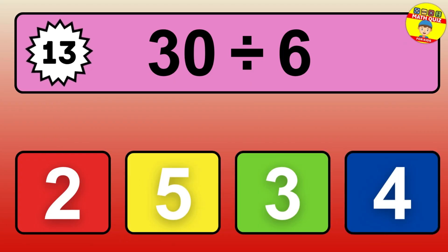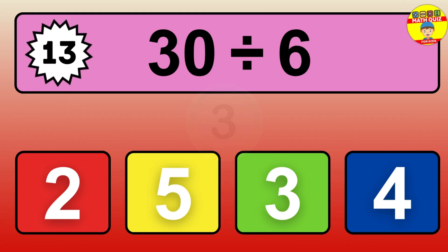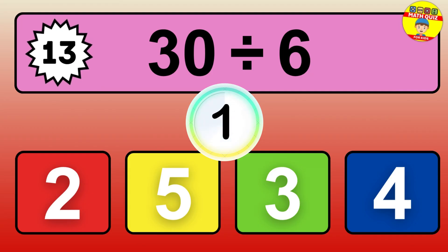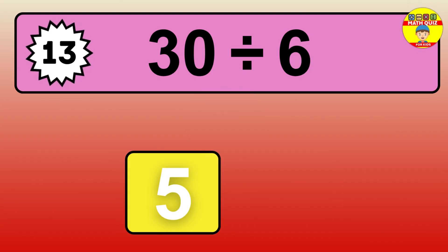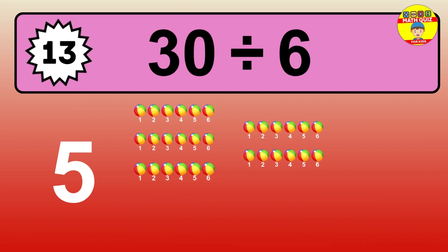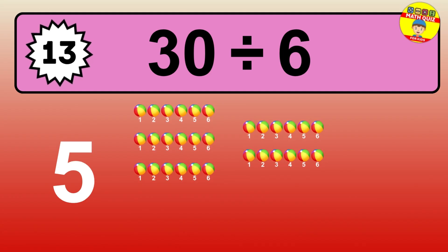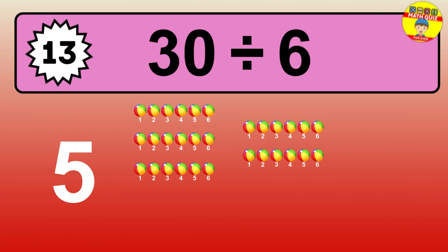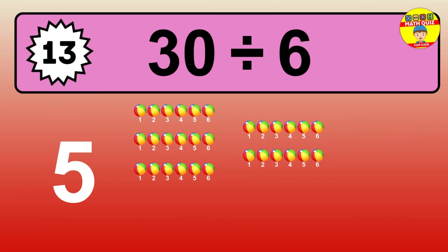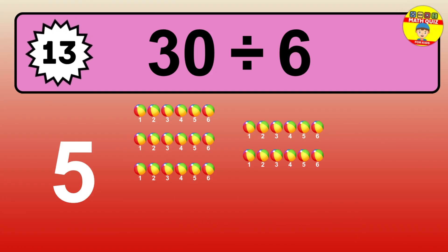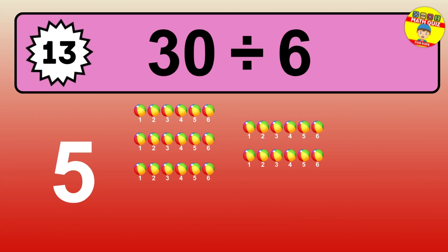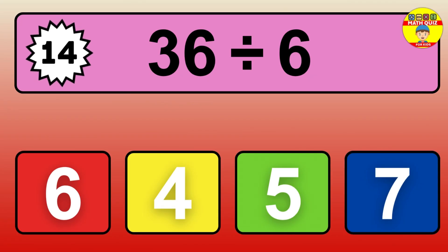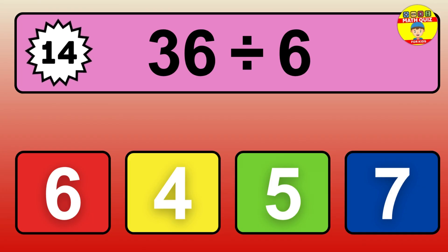16 divided by 4 — time to think. Let's go to the solution. Divide the number 16 by 4. Each group contains 4 units, so dividing 16 by 4 results in 4 equal groups. Thus, the result is 16 divided by 4 equals 4.